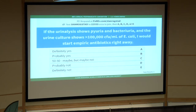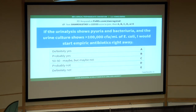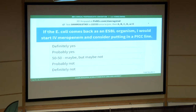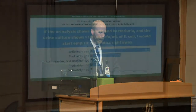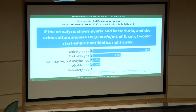If the urinalysis shows pyuria and bacteria, and the urine culture comes back with greater than 100,000 colony-forming units per mL of E. coli, would you start empiric antibiotics right away? Most people are saying definitely yes — at least more than half — with some probably yes, and a few holdouts saying maybe or probably not.